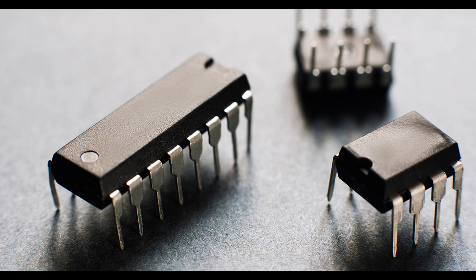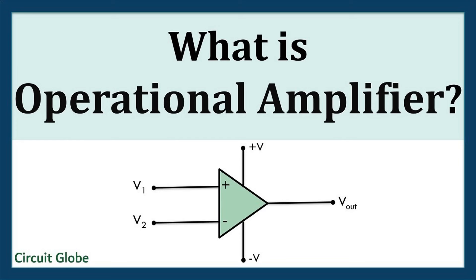Advantages of ICs: Miniaturization — ICs allow the integration of thousands to millions of components on a single chip, reducing the size of electronic systems. Reliability — the close proximity of components on a chip reduces the effects of external interference, enhancing reliability. Cost-effectiveness — mass production of ICs lowers production cost per unit, making electronic devices more affordable. Power efficiency — ICs often incorporate power-saving features and are designed for efficient energy consumption.